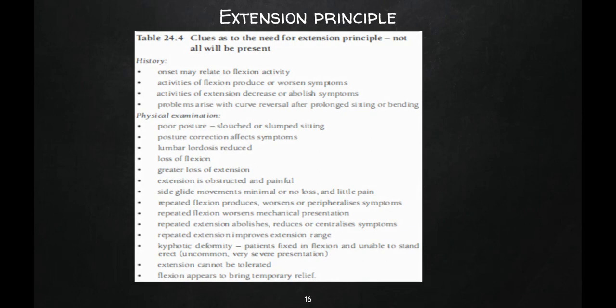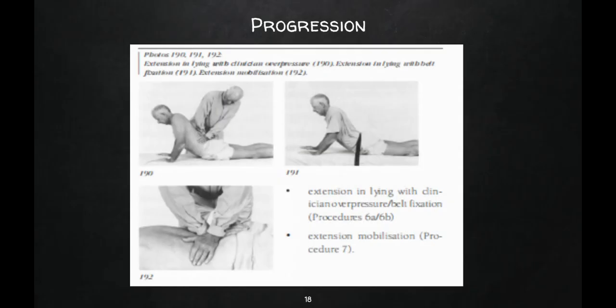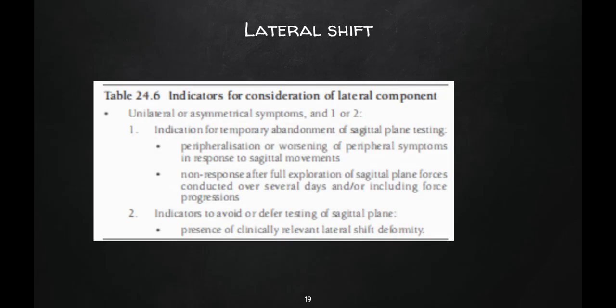As shown in the pictures, for the extension principle we first give postural education and teach correct sitting posture. Then prone lying is practiced — in prone position the patient does back extension exercises. In standing, the patient can also perform extension movements. This is the progression for extension exercises. Therapist overpressure can also be given with the patient in prone lying, and use of a belt can be incorporated.